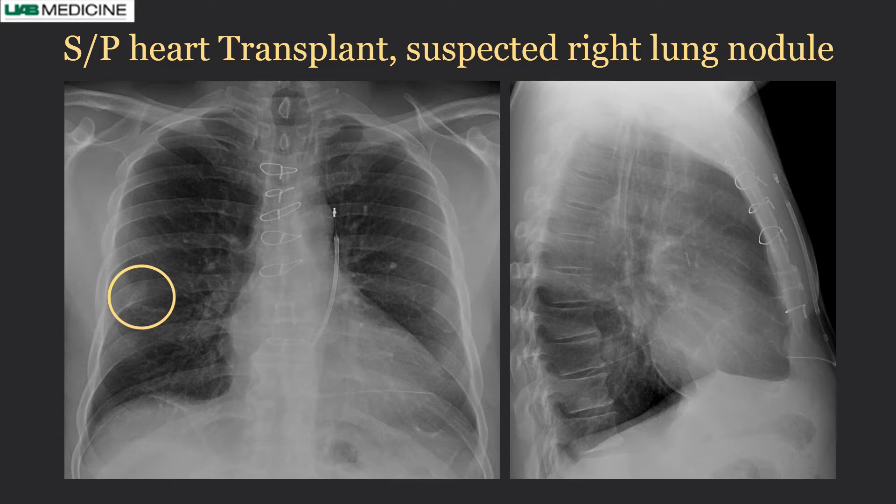We also look for opportunistic infection, which usually presents as nodules or consolidation, and also for PTLD — post-transplant lymphoproliferative disease — which can often present as nodules or masses.